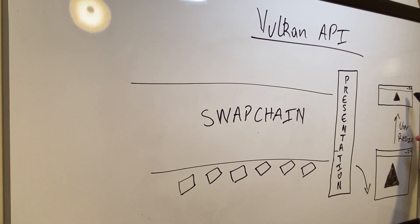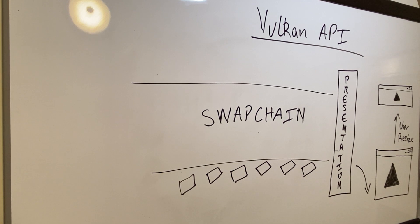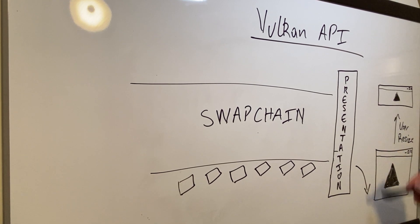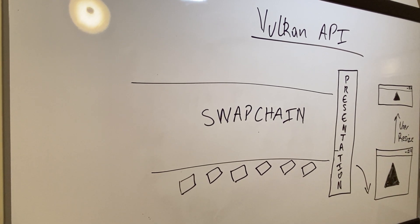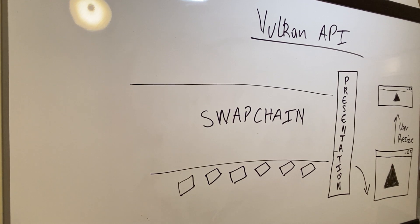Notice that the dimensions of this triangle is different from this triangle, and in order for this to happen, in order for Vulkan to successfully process all of what has happened here, there's a series of events that take place.